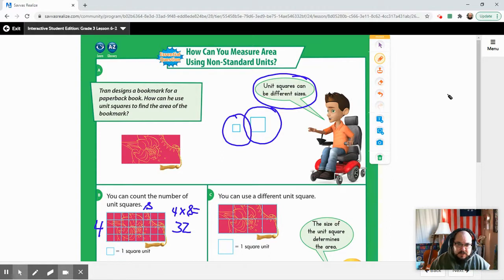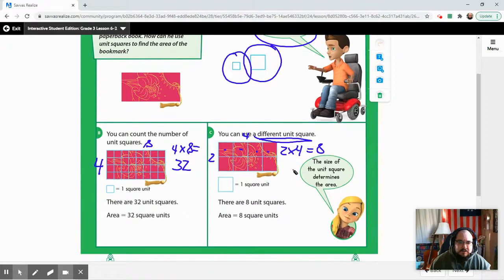But look over here. It's the same bookmark, but we use the bigger square unit. This is a different unit square, and this time there are only two different rows, and there are four of these in each row. So that is 2 times 4, which equals 8. So in this one, there are 8 square units. It's the same area, the same region, but we are using two different size unit squares, which means you will have different numbers for your area. So 32 square units and 8 square units.